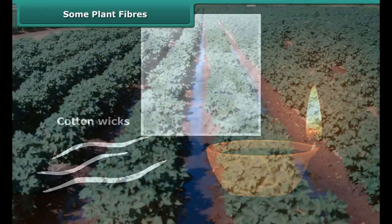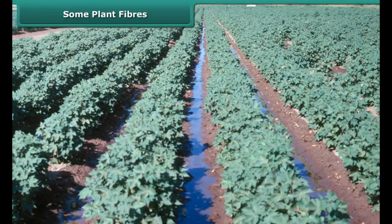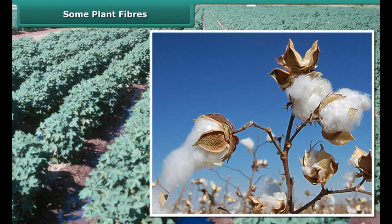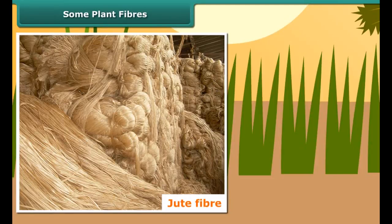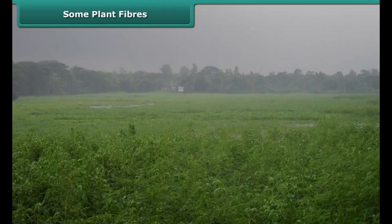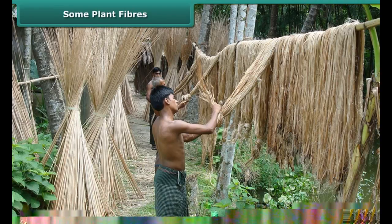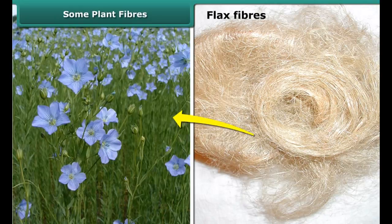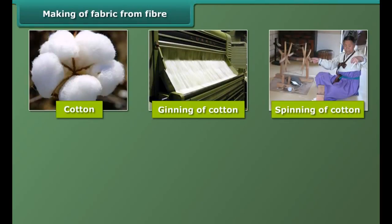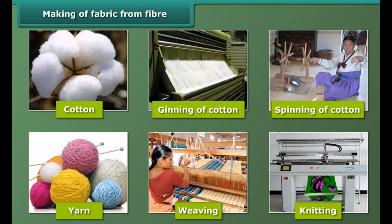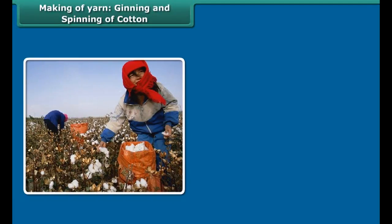Have you ever made wicks of earthen lamps during the Diwali festival? Do you know that they are made up of cotton? This cotton is obtained from cotton plants, which are grown at places having black soil and warm climate. The fruits of the cotton plant, after maturing, burst open and seed-covered cotton is obtained. Jute fiber is obtained from the stem of the jute plant. It is cultivated during the rainy season. The stems of harvested plants are immersed in water for a few days, then the stem rots and fibers are separated by hand. Flax fibers are also obtained from stems of the plant and are used mainly to make linen.